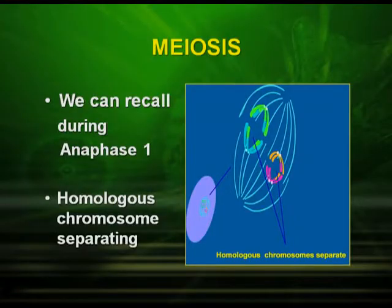The analogy can be seen during the process of meiosis. Let us recall meiosis that you have studied. During meiosis 1, the homologous chromosomes get separated. In the same way, when Mendel studied the second law — the law of segregation — the two alleles get separated. Till now, we talked about the monohybrid cross. Now let us see what happens in a dihybrid cross.